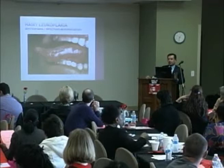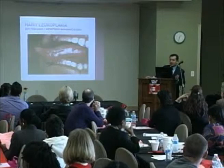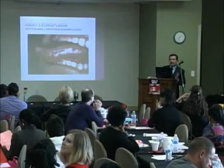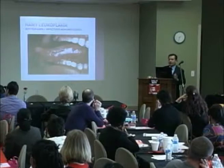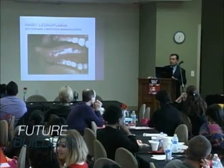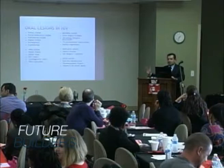Hairy leukoplakia — there are two kinds of leukoplakia: regular leukoplakia and hairy leukoplakia. Hairy leukoplakia is very closely associated with HIV. These are white patches that appear on the tongue or other parts of the mouth, caused by the Epstein-Barr virus. The Epstein-Barr virus also causes mononucleosis, but mono does not mean the person is HIV positive.